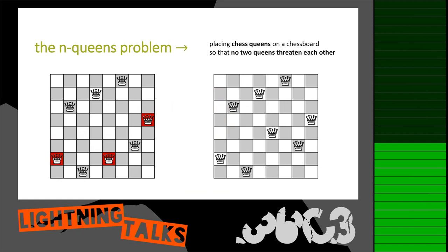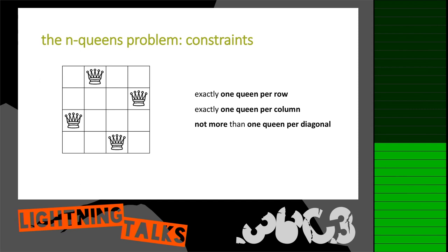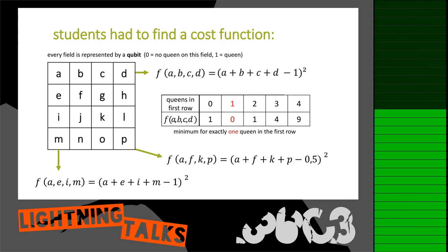In the N-Queens problem you place N queens on an N×N chess board so that no two queens threaten each other. A constraint is that each row must have exactly one queen. This can be translated into a cost function: every field on the chess board is represented by a qubit — one if there's a queen, zero if empty. You set up the cost function for a row by adding the four qubits, subtracting one, and squaring the result. You get the lowest cost (zero) when there is exactly one queen in the first row. Similarly you set up cost functions for diagonals and columns.